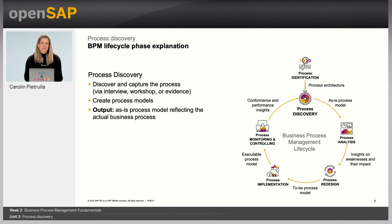Process models are flow diagrams that visually show the sequence of activities and the roles they are carried out by. Some of them might already exist, some might need an update, and some we will have to create from scratch. If they need to be created, we need to discover what they might really look like by creating as-is process models of the current processes.